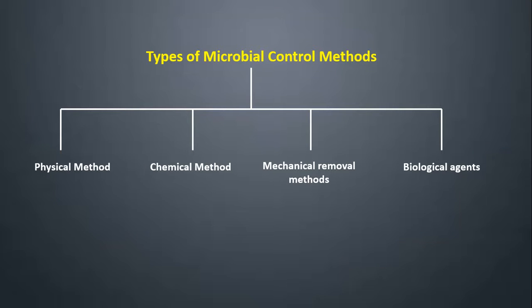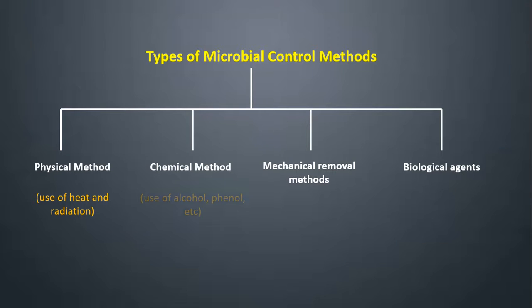Physical agents or physical method involves the use of heat and radiation to control the growth of microorganisms. Chemical agents or chemical method involves the use of different chemical agents — alcohol, phenol, etc. — that can be gaseous or liquid to control the growth of microorganisms.